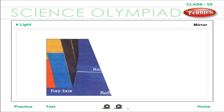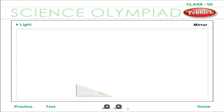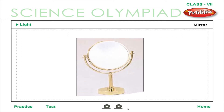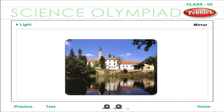Mirror: any smooth polished surface which can return a ray of light into the same medium is called a mirror. A looking glass is the best example. Any highly polished metal surface also acts as a mirror. Still water or oil, having smooth surfaces, and even highly polished furniture act like mirrors.